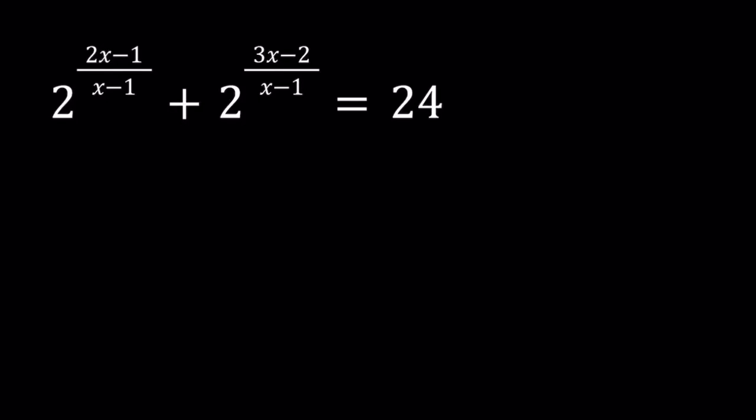Hello everyone. In this video we're going to be solving a nice exponential equation from Romania. We have 2 to the power 2x minus 1 over x minus 1 plus 2 to the power 3x minus 2 over x minus 1 equals 24. And we're looking for x values.